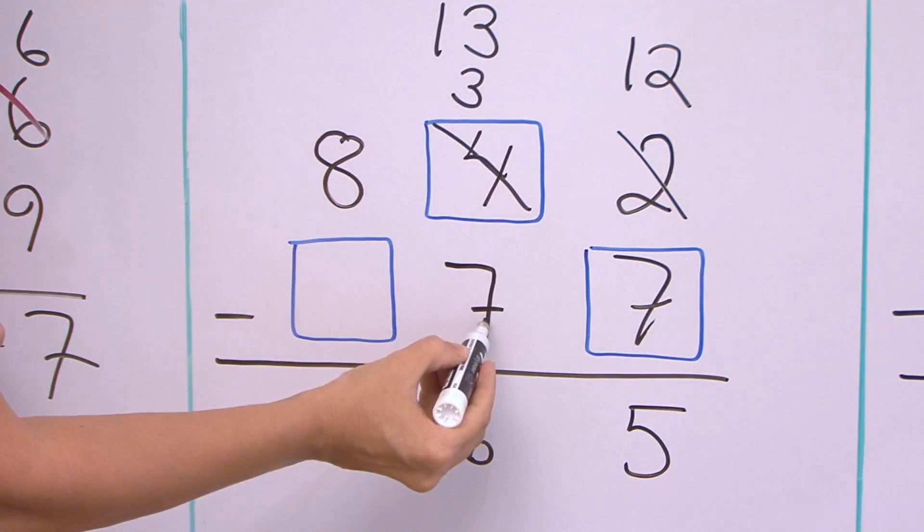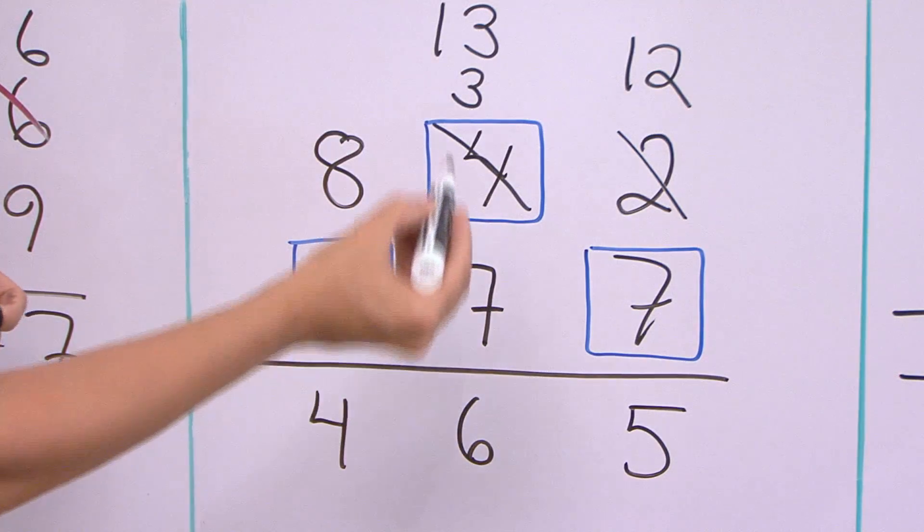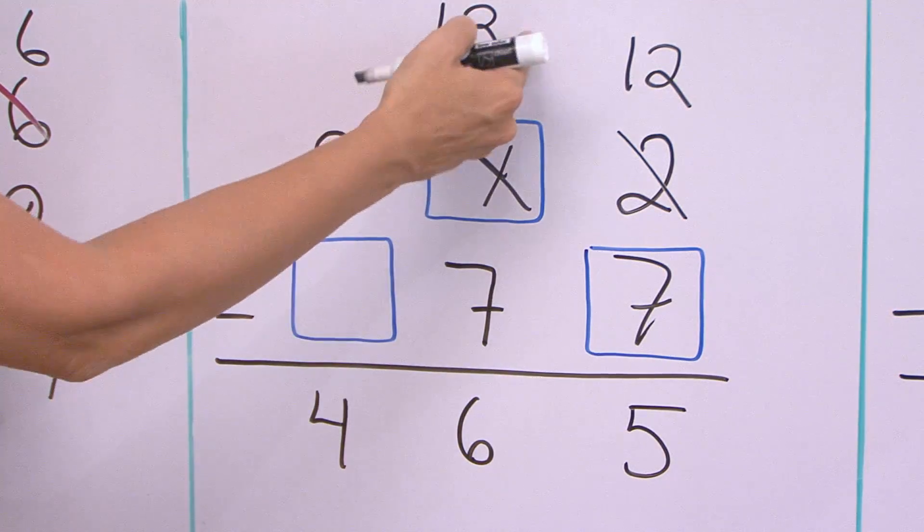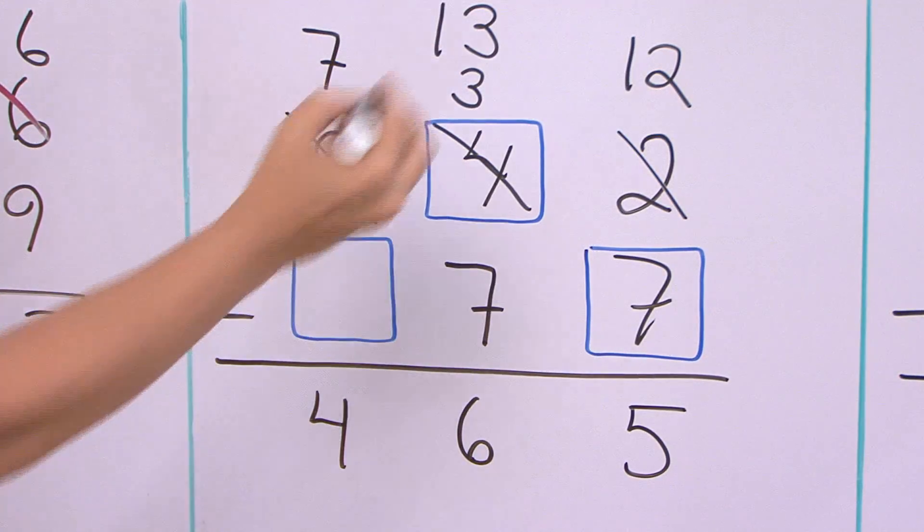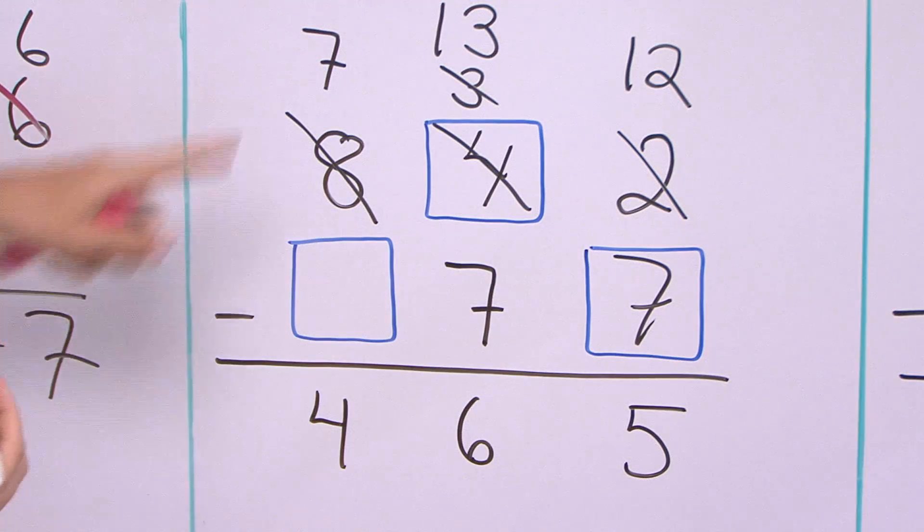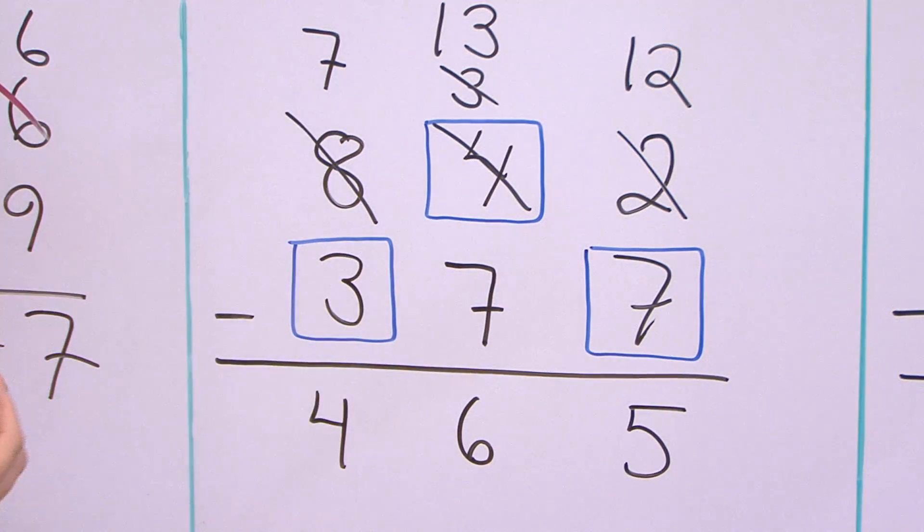But from three, they could not subtract. So they had to regroup to get the thirteenth. So this must have been seven. Like that. And then seven minus three equals four.